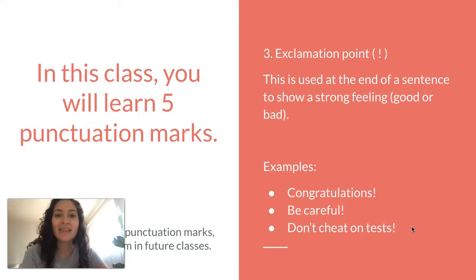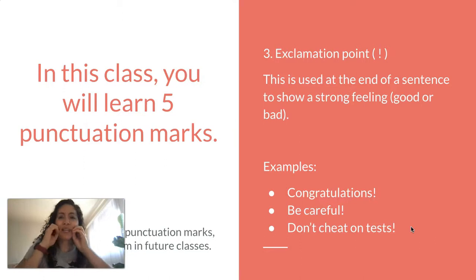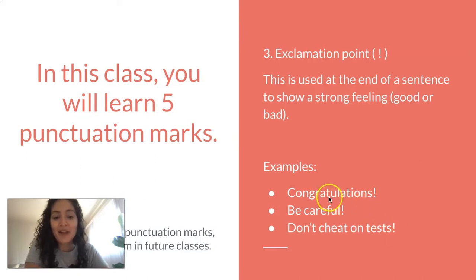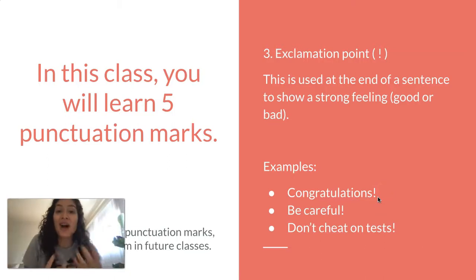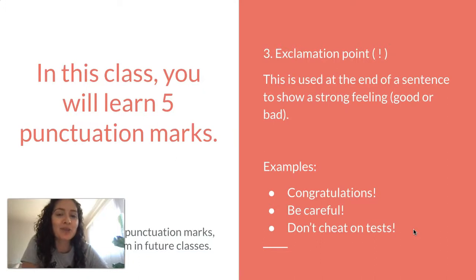Number three: the exclamation point. This is one of my favorite punctuation marks because with it we show a strong feeling — good feelings or bad feelings. When you're angry and you say something strong, or you're scared, shocked, or happy and want to show a strong feeling, you use an exclamation point. For example: "Congratulations!" or "Be careful! Don't cheat on tests!" When you read it, you use a stronger voice.